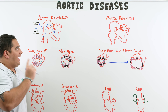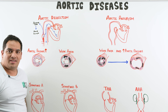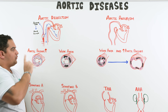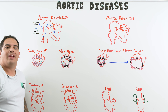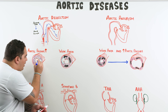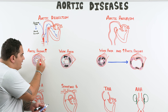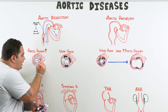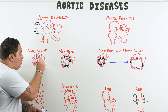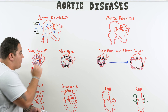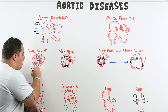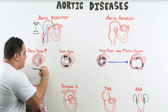With aortic dissection, we have to ask: what's causing this intimal tear? Why is the vessel lining ripping and letting blood into that false lumen? Two reasons: one is that the pressure in the aorta is simply way too high — high enough that blood literally rips through the intimal lining.